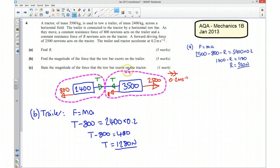It says, state the magnitude of the force that the towbar exerts on the tractor. Because of Newton's third law, we know that the force acting this way is going to be the same as the force acting this way. So we are again going to get a value of 1,280 newtons. Thanks very much.